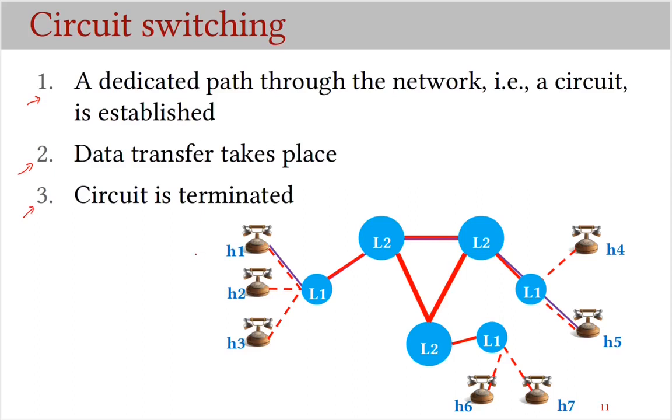For example, suppose h1 wants to talk to h5. Then this call request goes through nodes a, b, c, d to h5. If h5 is busy, then circuit is not established and h1 gets busy signal. Otherwise, a path from h1 to h5 is established. After this circuit from h1 to h5 is established, and as one of the users hangs up, the circuit is torn down.